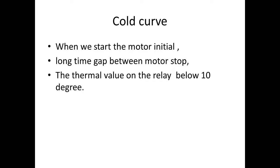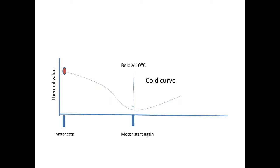In the same way, if you stop the motor for a longer gap — that means a 3 or 4 hour gap — and then start the motor, the relay curve will also follow the cold curve. This depends upon the cooling time of the motor. After you stop the motor, the thermal value in the relay will reduce slowly according to the cooling curve. When we start the motor again, if the temperature on the relay scaling is less than 10 degrees Celsius, then the relay is definitely going to use the cold thermal curve.